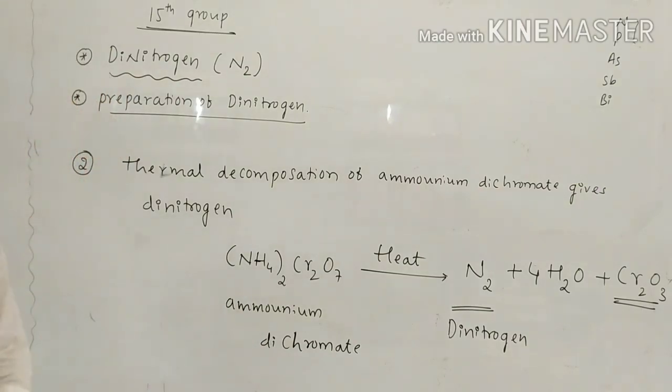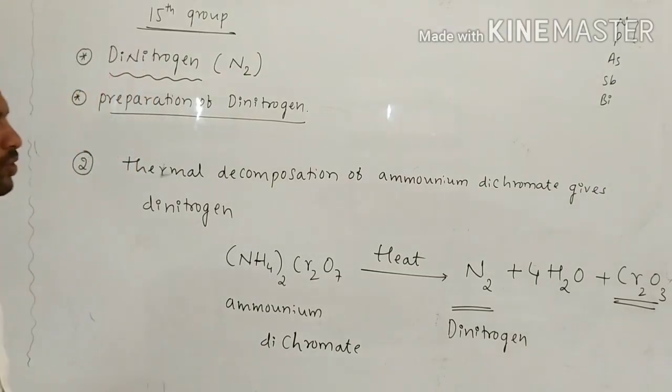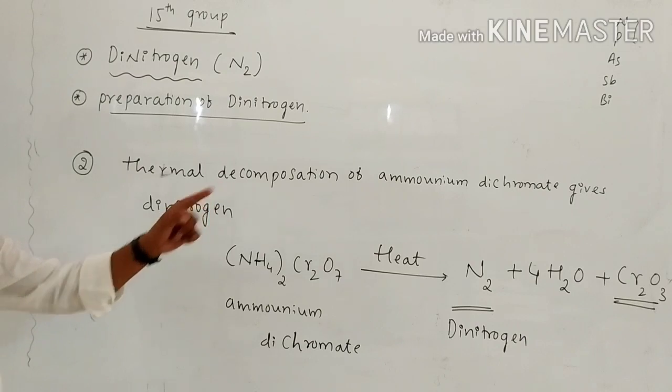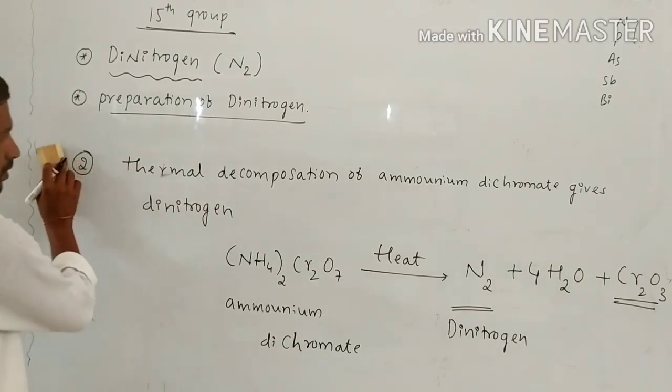This is the second preparation of di-nitrogen — the thermal decomposition of ammonium dichromate gives di-nitrogen. This is the second preparation.